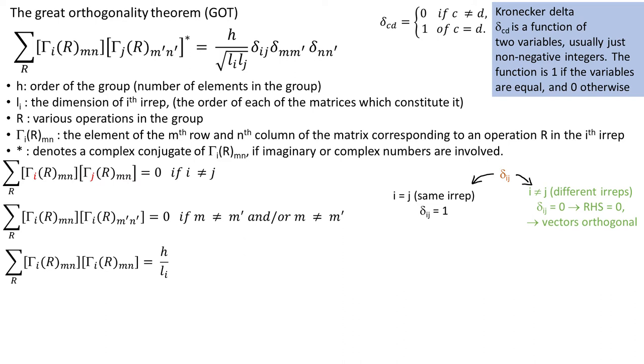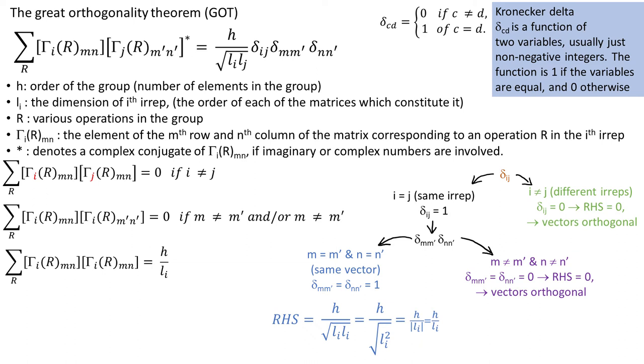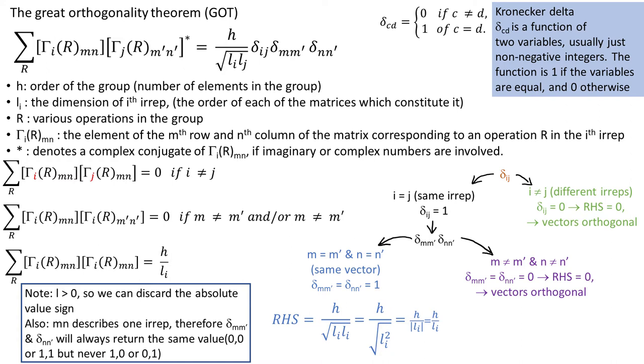If M is not equal M' and N is not equal N' then the two deltas take value 0. Right-hand side reduces to 0 and the vectors are orthogonal. But if M equals to M' and N equals to N' meaning that we are taking a dot product of the vector by itself then the right-hand side reduces to H over LI. Notice that we are under the same EREP now. Also the dimension is always positive so we can drop the absolute value sign. Also also MN refers to one EREP so for instance delta MN' refers to columns of both vectors. Therefore the two deltas NN' and MN' always return identical value. If one is 0 then the other is 0 as well.